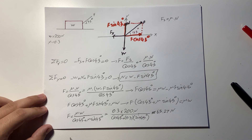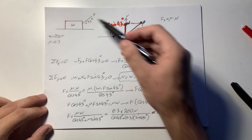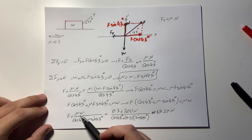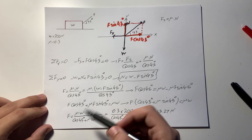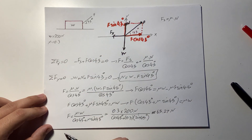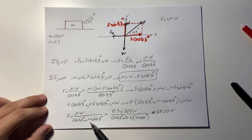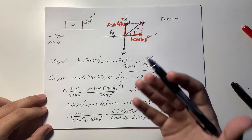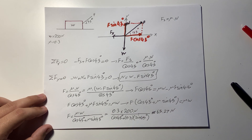One thing to notice from the formula F = μW / (cos(45°) + μ·sin(45°)): the larger the coefficient of static friction μ, the larger the force we need to move the object. The smaller the value of μ, the less force we need — which makes sense, because less friction means it's easier to move the object, and more friction makes it harder.